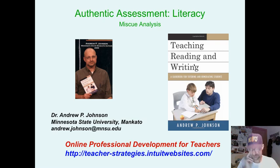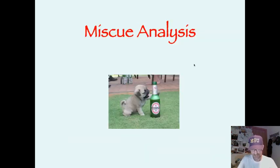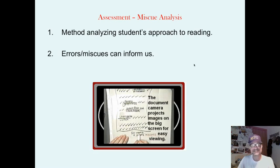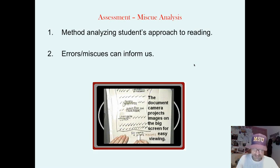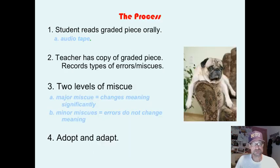This is a video on authentic assessment — specifically on MISQ analysis, which is a method for analyzing how students are approaching the reading process. It's a form of direct assessment because you are directly assessing the reading process. It's done one-on-one and is built on the idea that errors, or miscues as we call them, can inform us. They tell us how the reader is processing the print, and these types of miscues can inform our teaching.